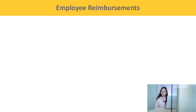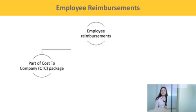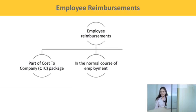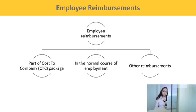On the basis of these principles, employee reimbursements can be divided into three categories: first, reimbursements which are part of the cost-to-company (CTC) package; second, reimbursements provided in the normal course of employment like free tea, coffee in the office, and travelling reimbursements; and third, other reimbursements like Diwali gifts and special awards to an employee. Let us understand these categories one by one.